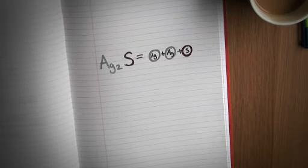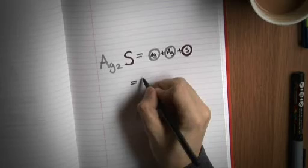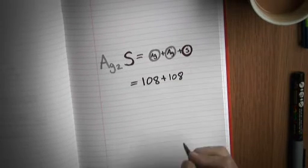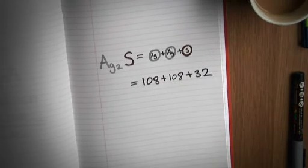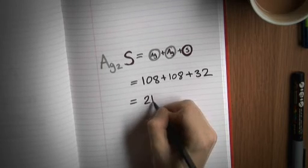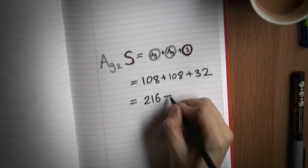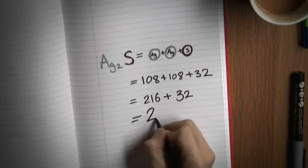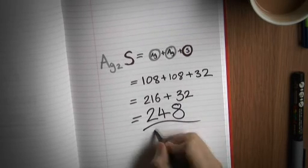Okay so there are two atoms of silver, their mass looking at the periodic table is 108 each, so the total amount of silver is two times 108 that's 216, plus we've got one atom of sulfur so that's looking at the periodic table 32, and if we add all that together we get 248. Is that right?